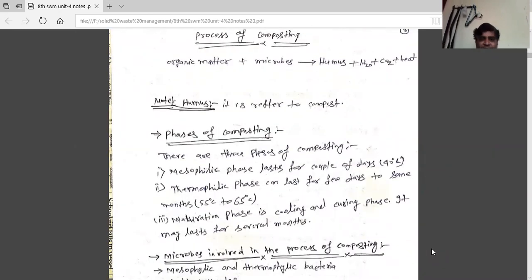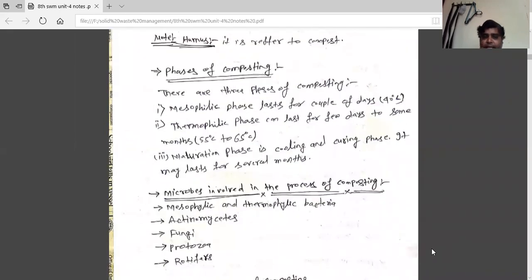Hello everyone, we'll discuss the phases of composting. There are three phases of composting: first, the mesophilic phase lasts for a couple of days at 40 degrees. Second, the thermophilic phase can last for a few days to some months at 55 to 65 degrees.